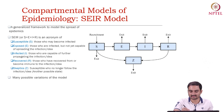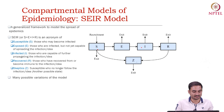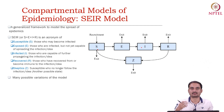So this is a transition diagram from one state to another state. From susceptible state, you can move to exposed state. From exposed, you can move to infected state. From infected, you can move to recovery state. From susceptible state, you can move to skeptical state. From skeptical state, when you have got some sort of herd immunity, you will never get infected.